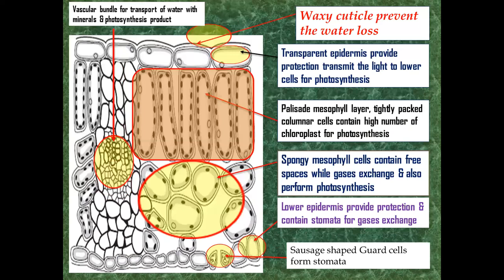Next, we are moving to our comprehensive slide. In this, we studied about the bifacial leaf consists of the waxy cuticle layer, which provides prevention of loss of extra water. Below, we have transparent epidermis. Below we have palisade mesophyll for photosynthesis, while spongy mesophyll, the primary function is for gaseous exchange. And the lower epidermis provides protection and has stomata for gaseous exchange. While the vascular bundle present in this leaf for transport of water and minerals and photosynthetic product.